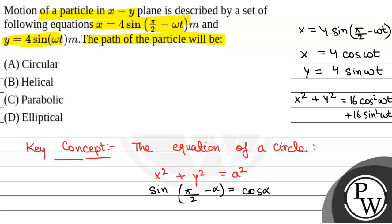Now, cos square omega t plus sin square omega t will be equal to 1. So, x square plus y square will be equal to 16.